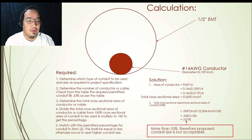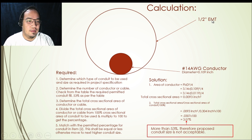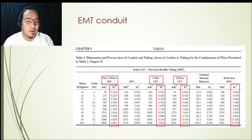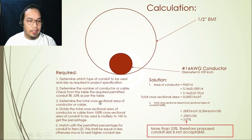For the sample calculation, the first step is to determine which type and size of conduit to use. In this example, we are using EMT, 1/2 inch size. The second step is to determine the number of conductors or cables inside the conduit. In this example there is only one conductor, so referring to the table, we can only use 53% of the total cross-sectional area of the conduit.